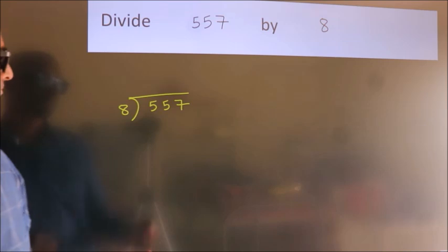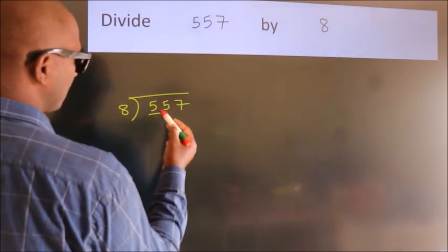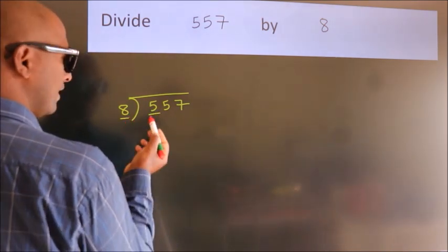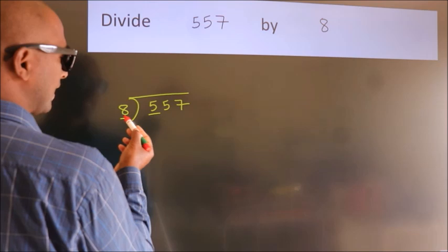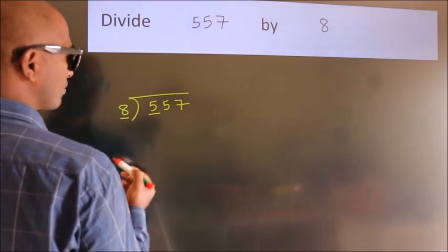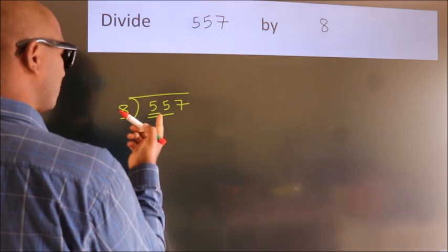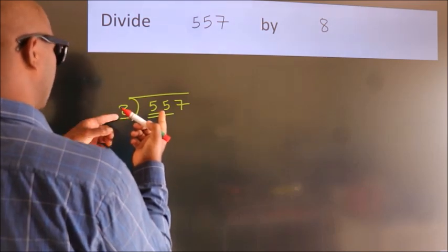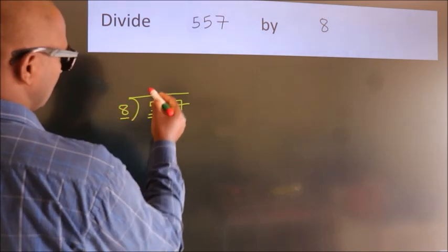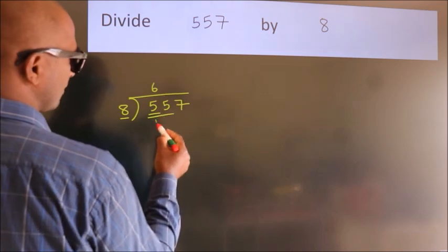Next, here we have 5, here 8. 5 is smaller than 8, so we should take two numbers: 55. A number close to 55 in the 8 table is 8 times 6 equals 48.